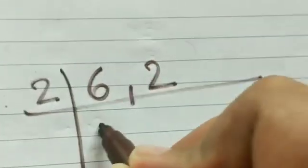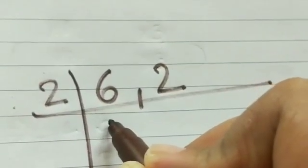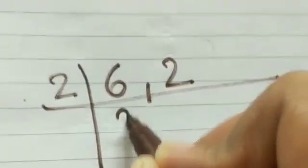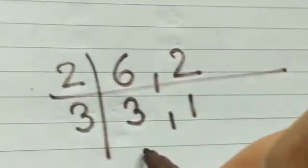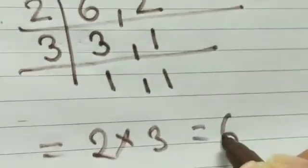So both are even numbers. So we'll start with the first number 2. So 2 3s are 6, 2 1s are 2. Again 3 1s are 3 and 1 3s are 3. So the LCM will be 2 multiplied with 3, that is 6.